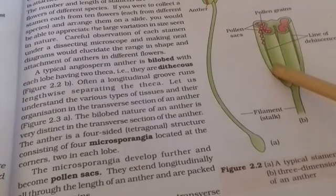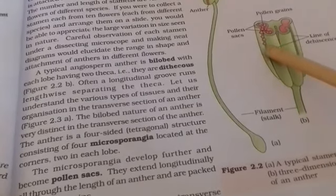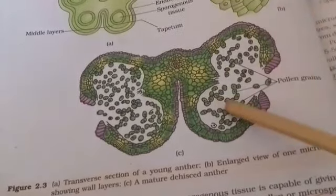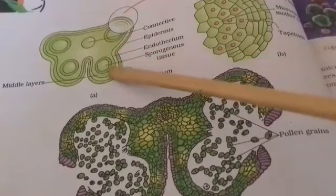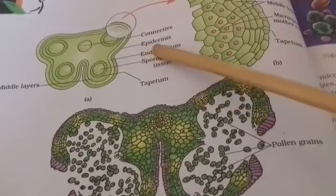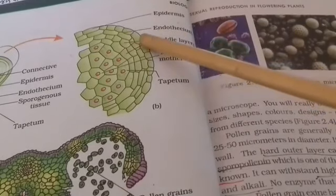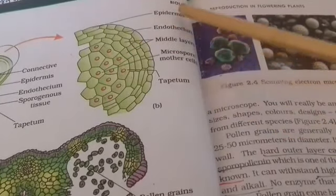The structure of microsporangia is very important. This is the immature or young anther. The diagram shows a transverse section of a young anther, an enlarged portion of the microsporangia, and a dehisced anther. There are four microsporangia, each made up of outer wall layers: the outermost epidermis, then endothecium, then three to four middle layers, and the innermost layer called the tapetum. The outermost three layers — epidermis, endothecium, and middle layers — are protective in nature.